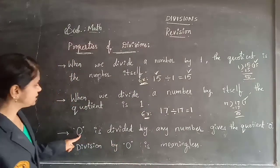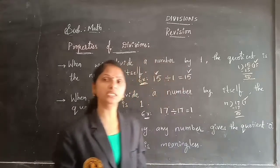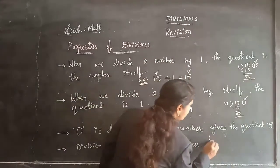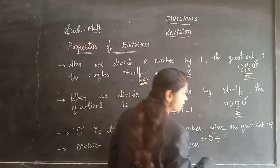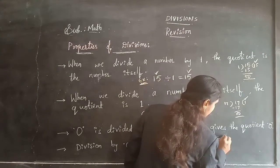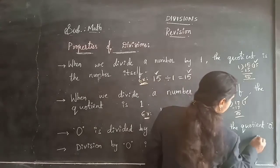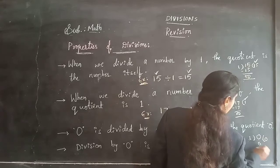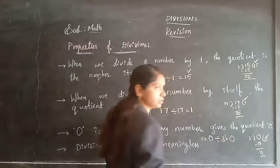Third point: 0 divided by any number gives quotient 0. When 0 is dividing, for example 0 divided by 3: 3×0 = 0. So 0 I am getting as a quotient.